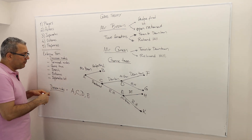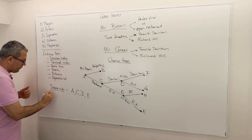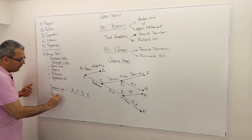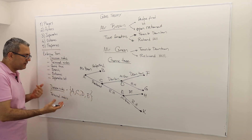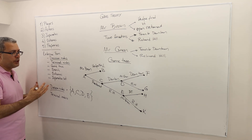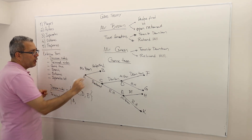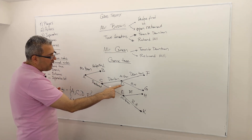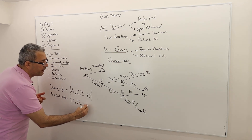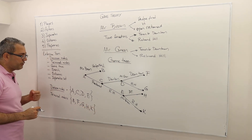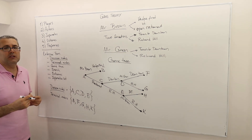The other dots we call terminal nodes. As the name suggests, these are terminal because the game is basically over at these nodes. So C, A, D, and E are decision nodes; the rest are terminal nodes.